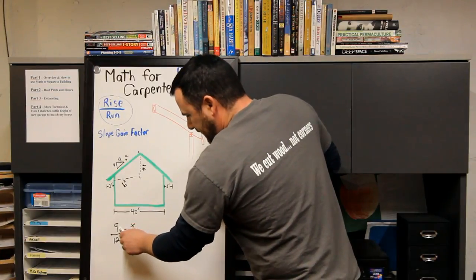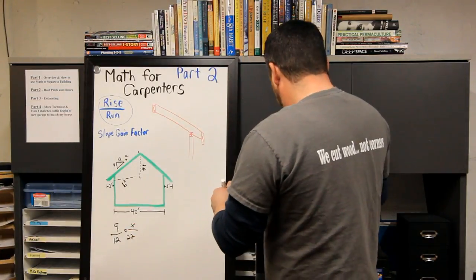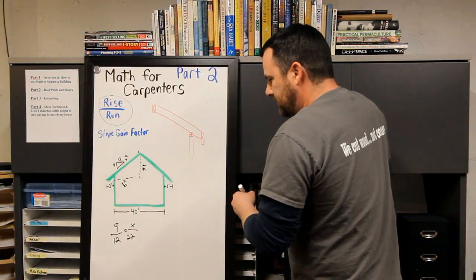Now I cross multiply and divide. So I go 9 by 22 divided by 12 equals 16.5 feet.